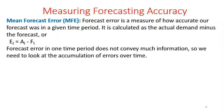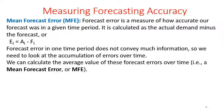The forecast error in one time period does not convey much information, so we need to look at the accumulation of errors over a period of time. Based on the data available, we can find out the errors — the difference between all actual values and all forecast values — which gives us the error for each time period. We can then calculate the average value of these forecast errors over a period of time, which we call the mean forecast error or MFE.